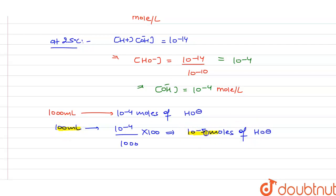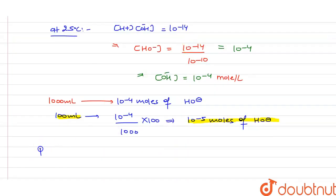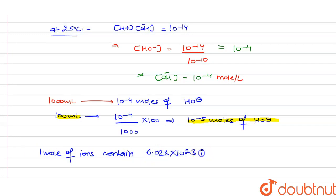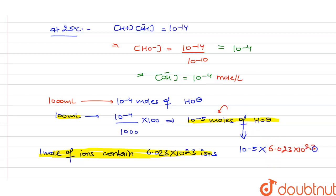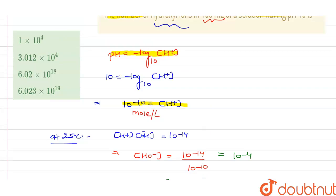The question asks about the number of hydroxyl ions present. We know that one mole of ions contains Avogadro's number, that is 6.023 × 10²³ ions. Similarly, the number of hydroxyl ions present in 10 to the power minus 5 moles of OH⁻ ion will be equal to 10 to the power minus 5 multiplied by 6.023 × 10²³. On solving, we get 6.023 × 10¹⁸ number of OH⁻ ions, which exactly matches our third option. So our third option is correct.